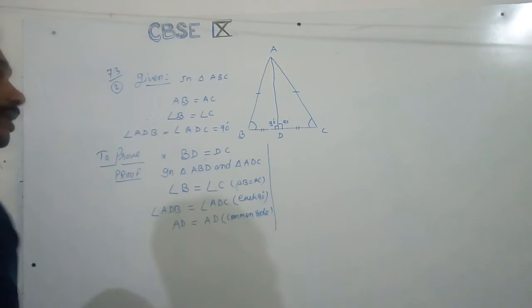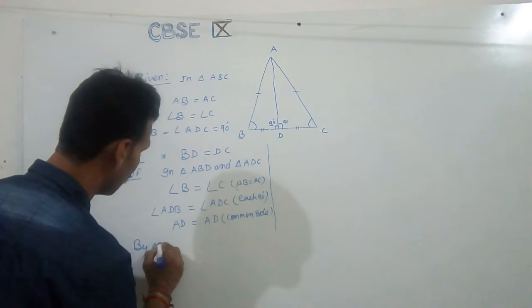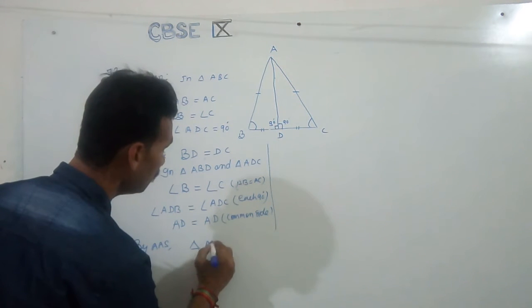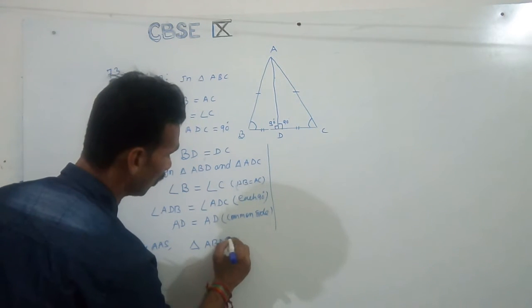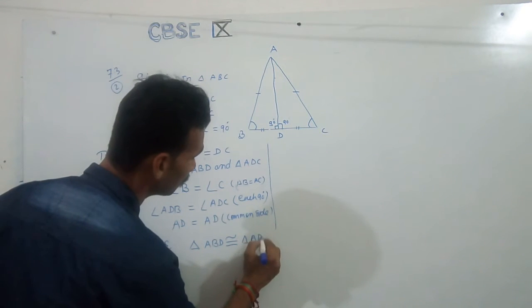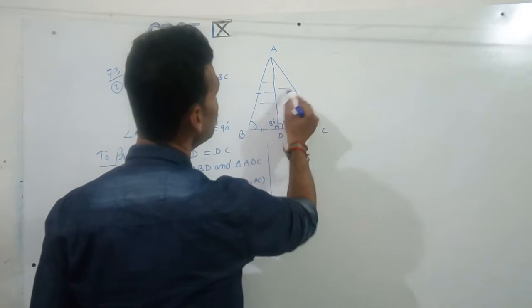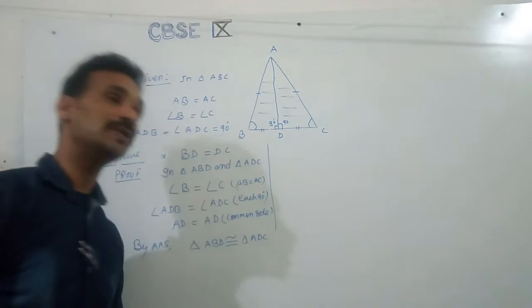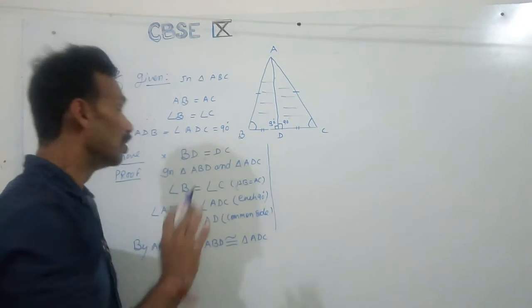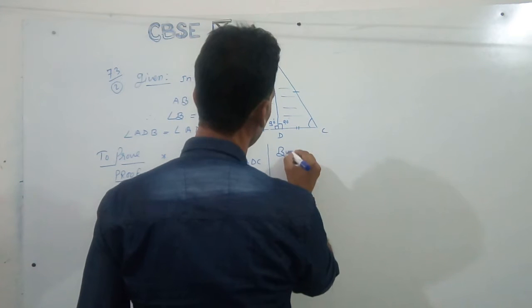So angle, angle, and one common side, and AD equal to AD common side, common side, common side, clear. Then we know that angle angle side. So by angle angle side, triangle ABD congruent to triangle ADC by angle angle side congruence.